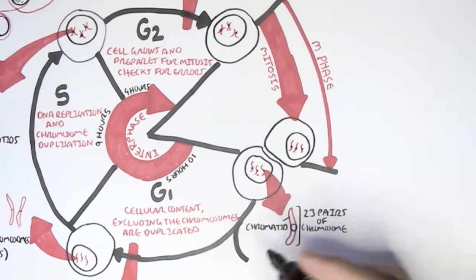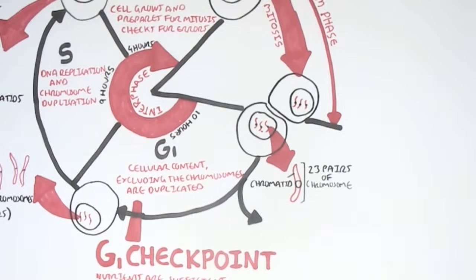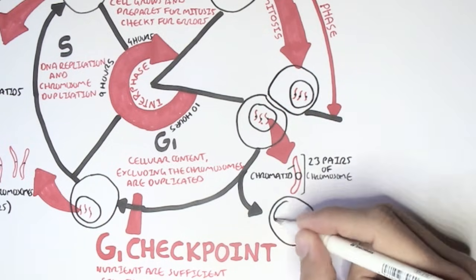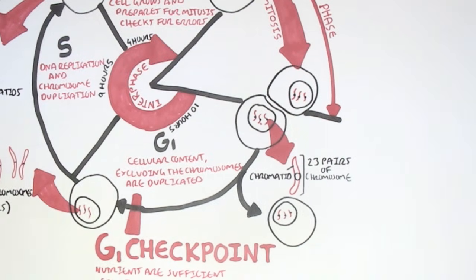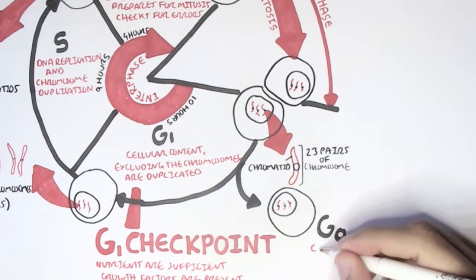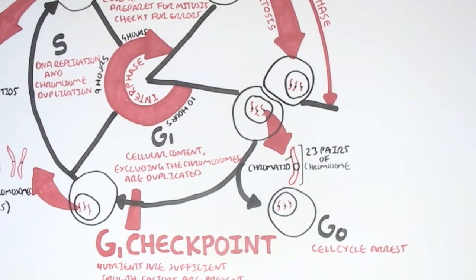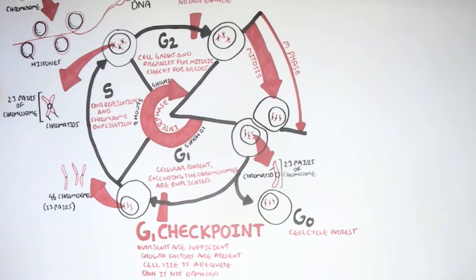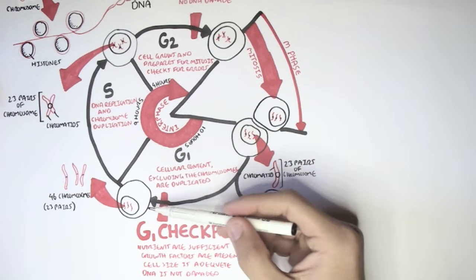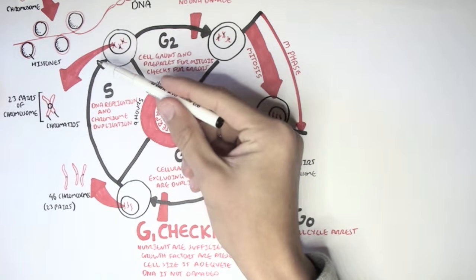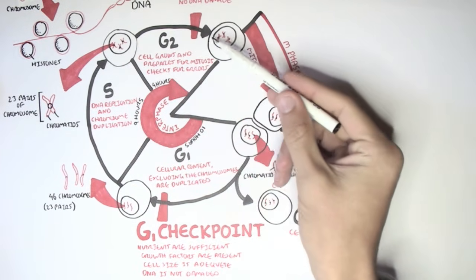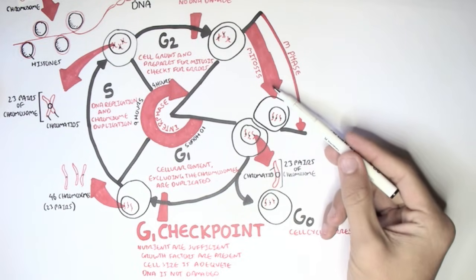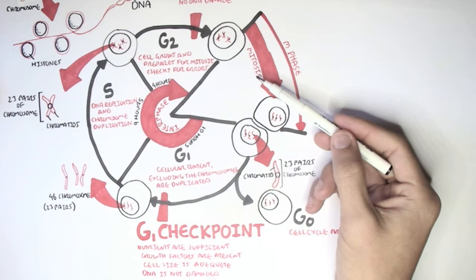Now, these daughter cells don't have to enter the growth phase straight away. They can actually go into a cell arrest, where they just stay around. This phase is known as the G0 phase, where the cell cycle doesn't really do anything—arrest. Of course, after a while, it will enter the growth one phase, the synthesis phase, and then the G2 phase, where it will then enter mitosis, and then it will produce two identical cells again.